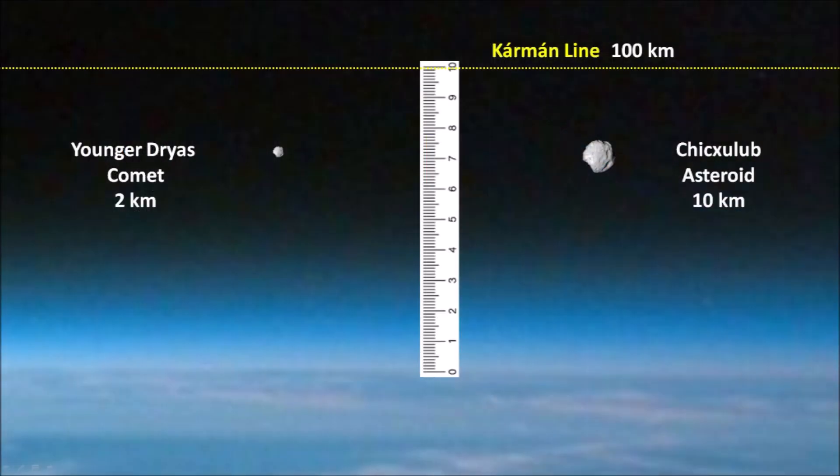The Chicxulub asteroid that killed the dinosaurs measured 10 km in diameter, which is only one-tenth of the distance from the surface of the Earth to the Kármán line denoting the beginning of space. The Younger Dryas comet, with a diameter of 2 km, was just a tiny speck compared to the size of the Earth. If it had hit solid ground, it would have made a smaller crater with a kill radius of about 500 km, but by hitting ice — which has one-third the density of rock — the icy ejecta went much farther, with a kill radius of about 1,500 km.